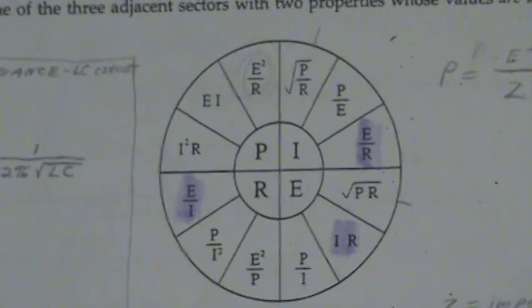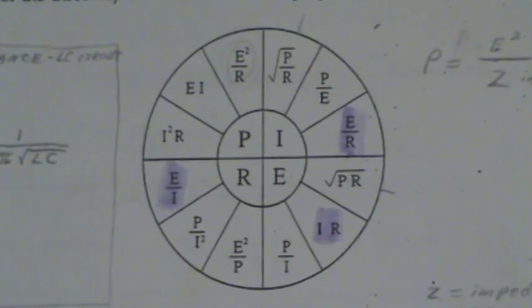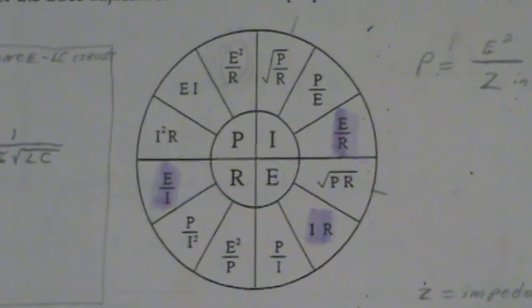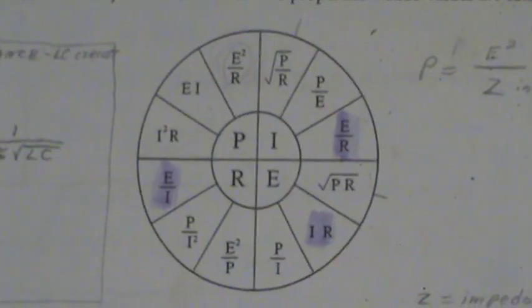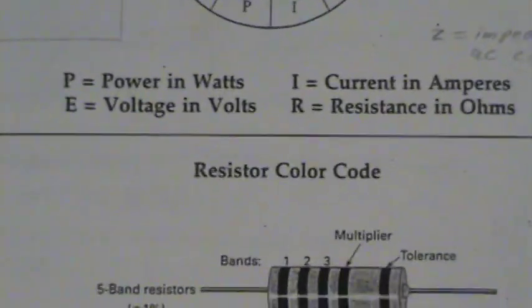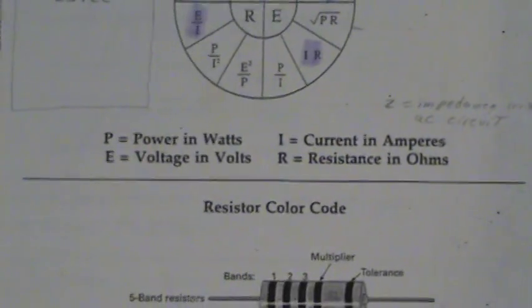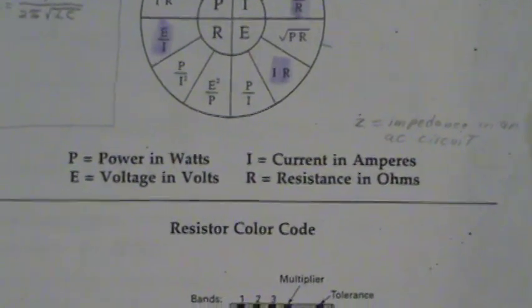There's ohms law, power formulas, power, current, resistance, voltage. Okay. Saturday, October 17th. And there's power and watts, voltage and volts, current and amps, resistance and ohms.